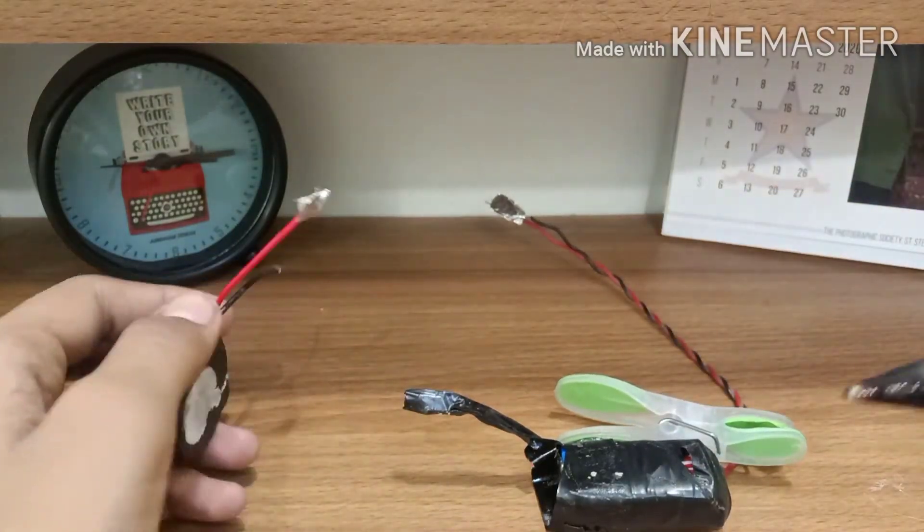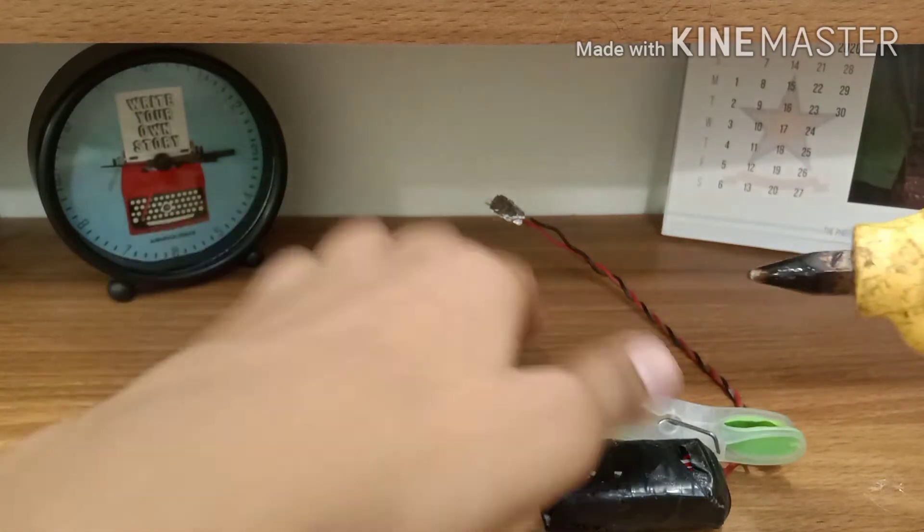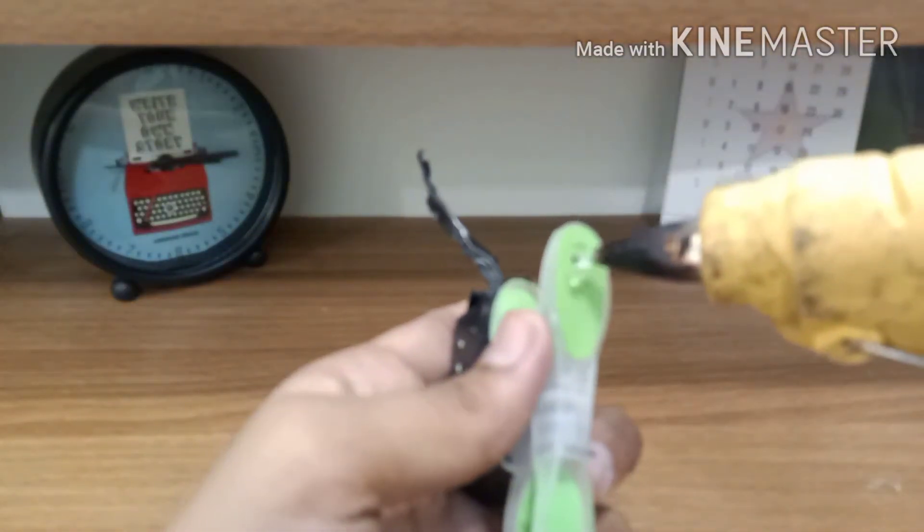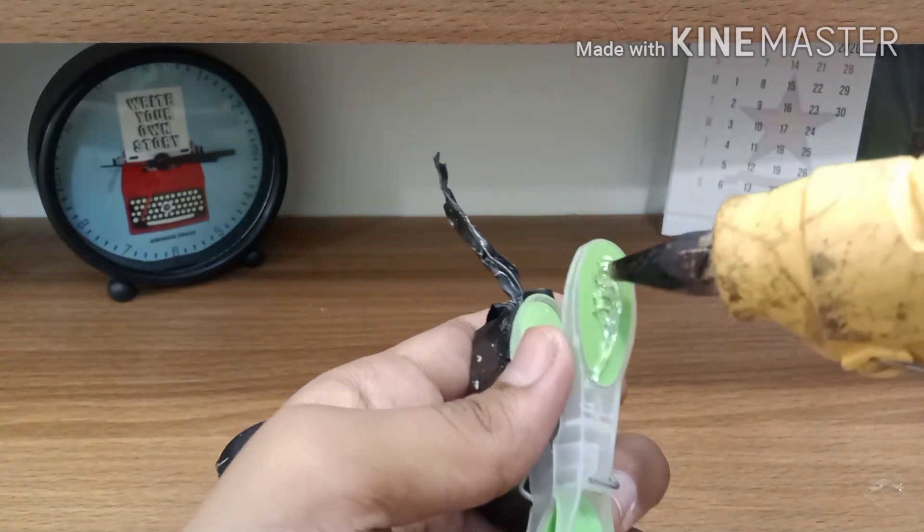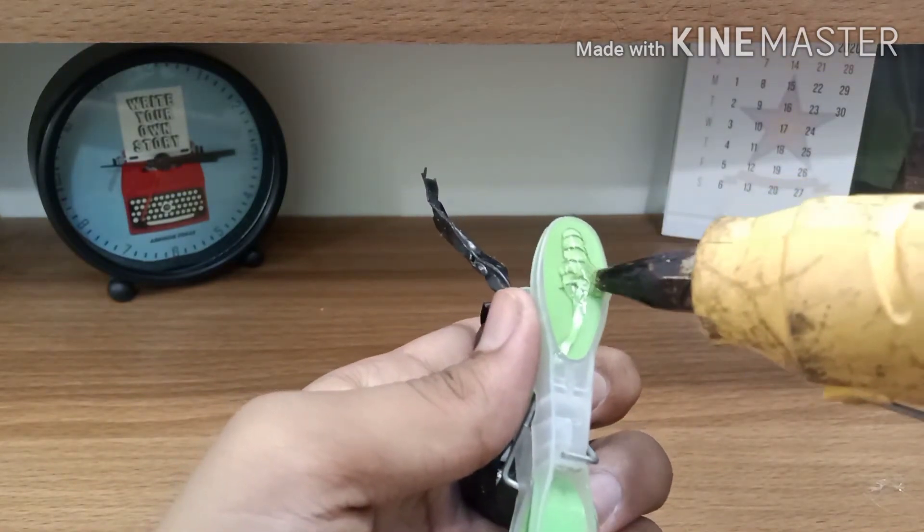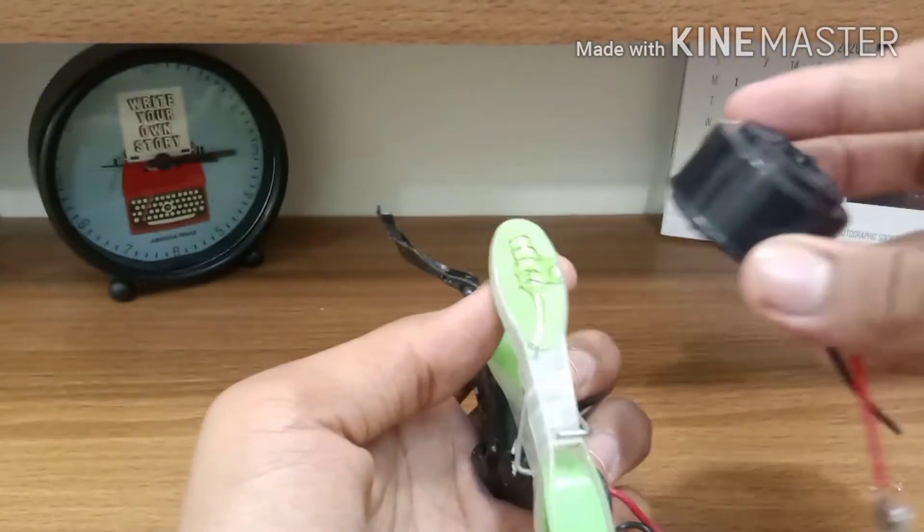Now you have to paste the aluminium foil pieces on both the touching ends of the plastic clip and stick the buzzer with the help of the hot glue gun on the other side of the plastic clip.